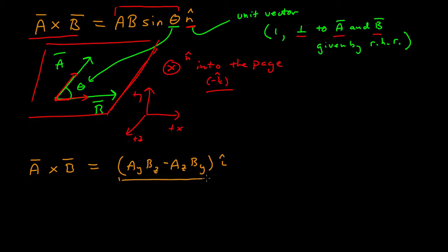This whole thing is the x component. So the y component, then, is the z component of A times the x component of B minus the x component of A times the z component of B. And that's all the y component of the cross product.